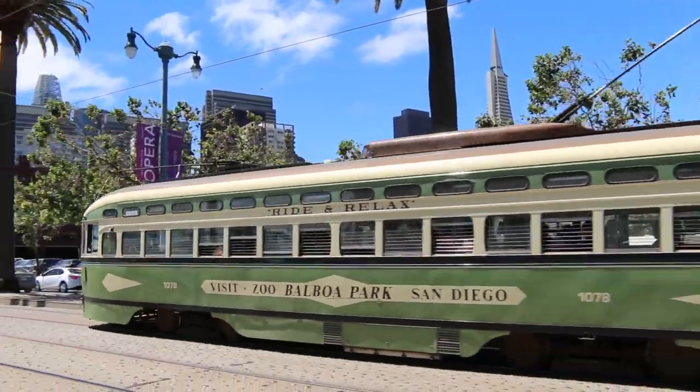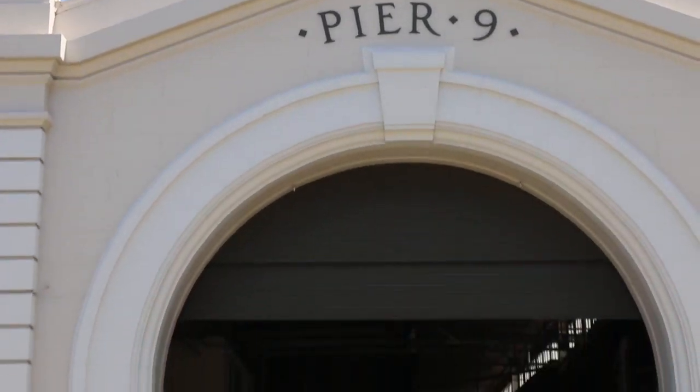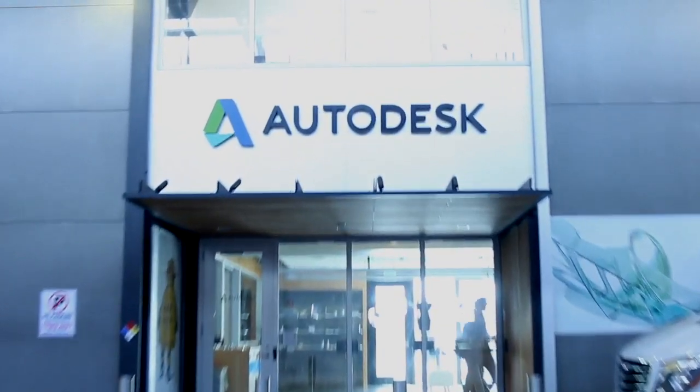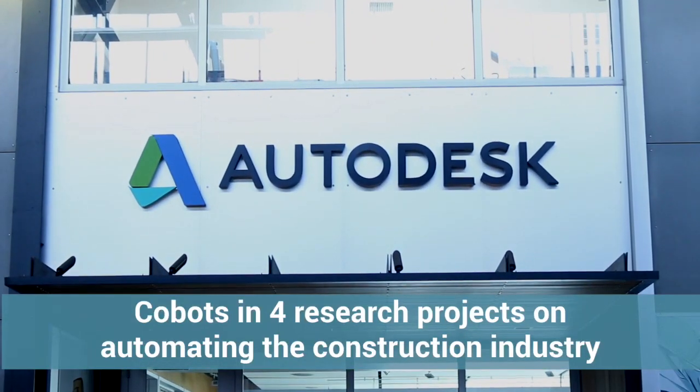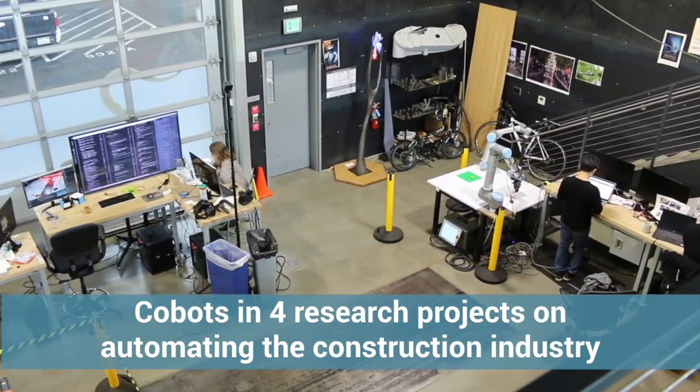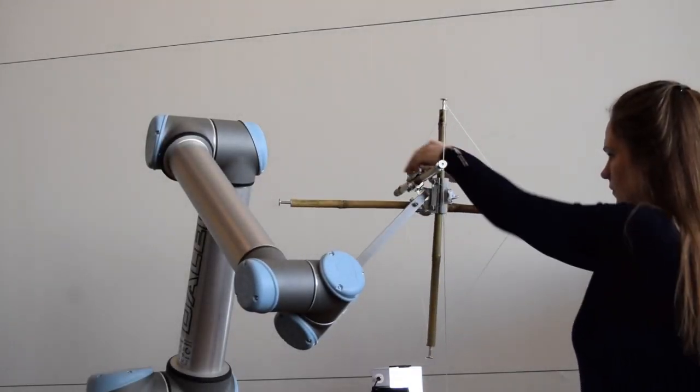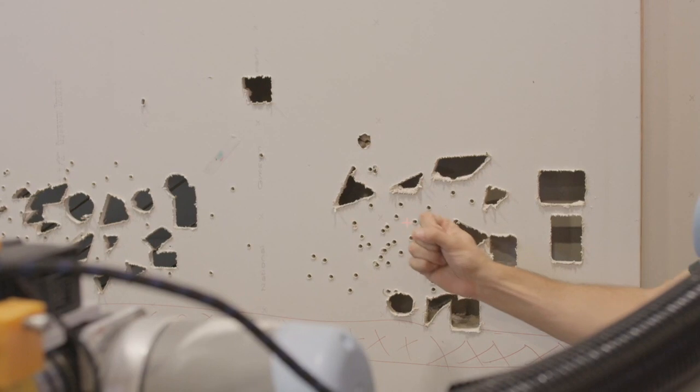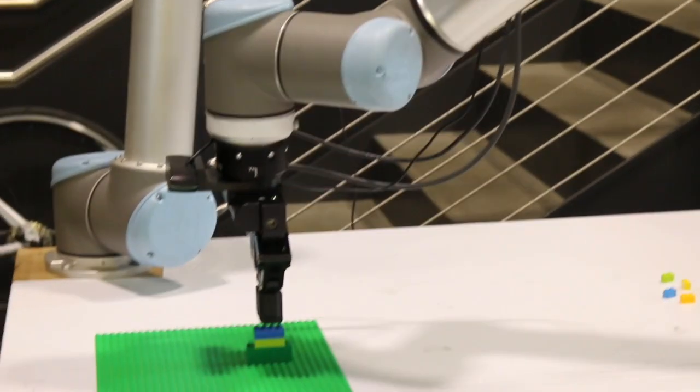At Autodesk's Robotics Lab in San Francisco, UR robots are used in research projects exploring new ways to automate the construction industry. The projects span human-robot interactions, machine learning, drawing, and smart assembly systems.